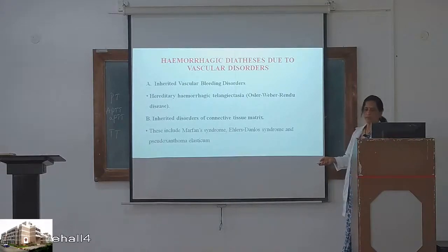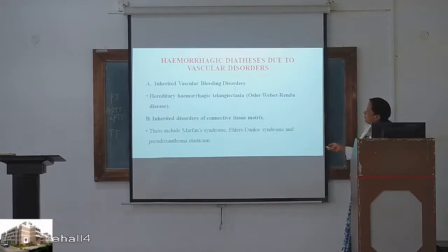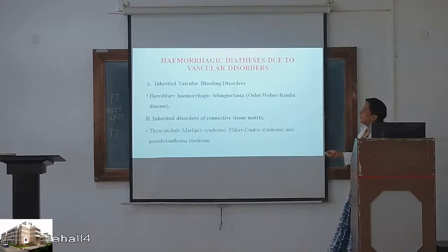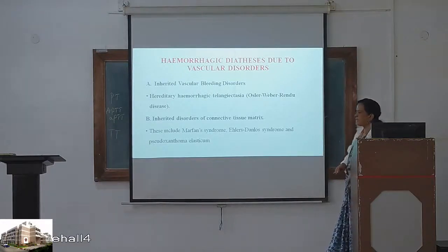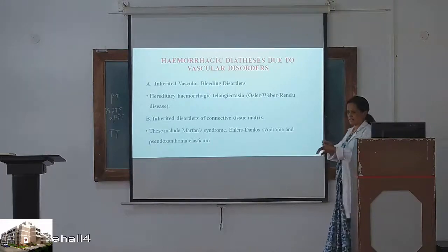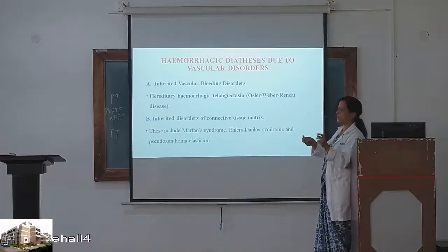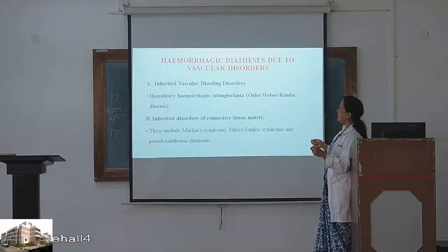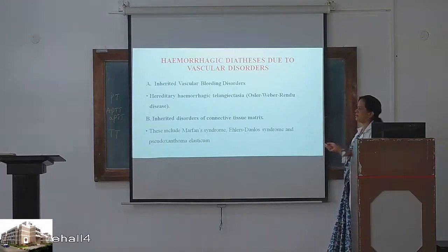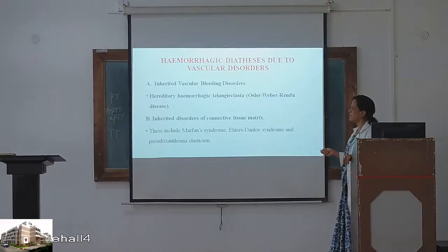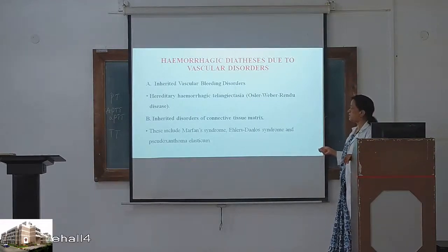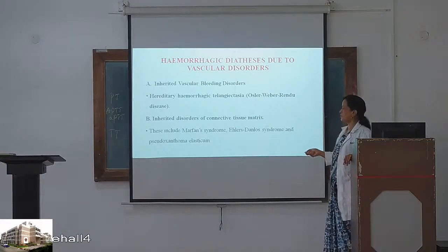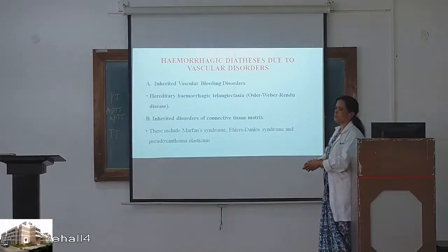Hemorrhagic disorders due to vascular causes: one is inherited vascular bleeding. There are certain conditions where there is telangiectasia — dilated vascular channels. One syndrome is Osler-Rendu-Weber syndrome. Then inherited disorders of connective tissue matrix — remember Ehlers-Danlos syndrome, Marfan syndrome, and Pseudoxanthoma elasticum.